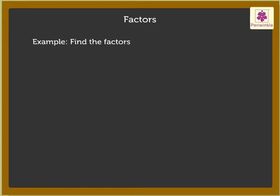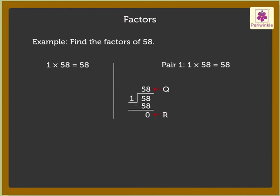Find the factors of 58. The first pair is 1 into 58 is equal to 58. Here, when we divide 58 by 1, we get the quotient as 58. And when we divide 58 by 58, we get the quotient as 1. In both cases, the remainder is 0. Thus, it means that 58 is divisible by 1 and 58.